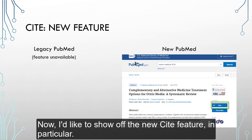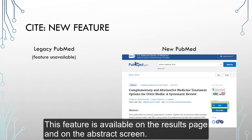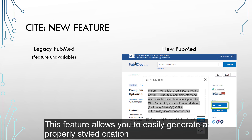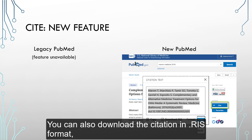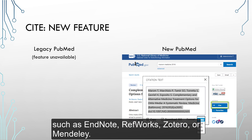Now, I'd like to show off the new cite feature in particular. This feature is available on the results page and on the abstract screen — it was previously only available in PubMed Central. This feature allows you to easily generate a properly styled citation in AMA, MLA, APA, or NLM citation format. You can also download the citation in .RIS format, which is a standard citation format used widely in reference management software such as EndNote, RefWorks, Zotero, or Mendeley.